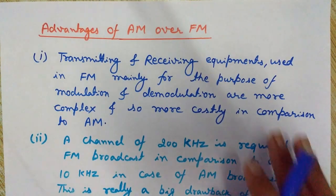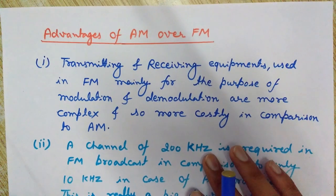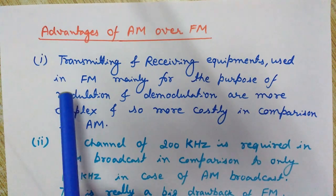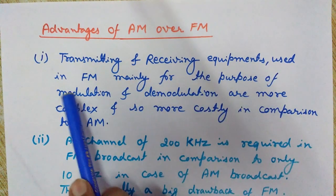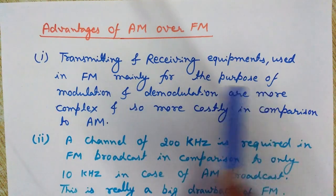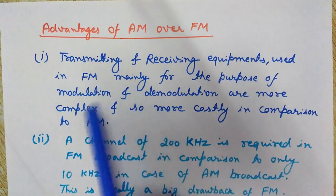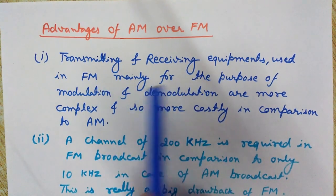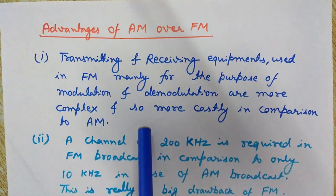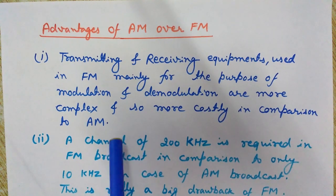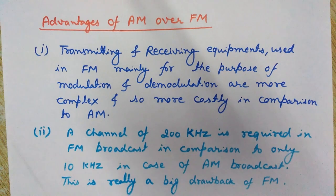The first advantage of AM over FM is that transmitting and receiving equipment used in FM — mainly for modulation and demodulation — is more complex and more costly in comparison to AM. This is a significant disadvantage of FM: the circuitry of FM receivers and transmitters is comparatively expensive and complex.